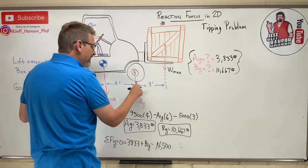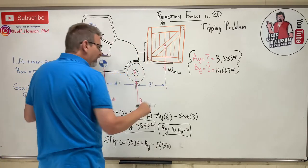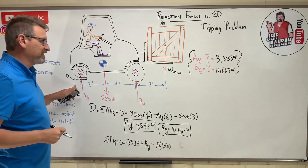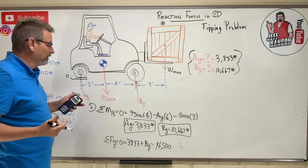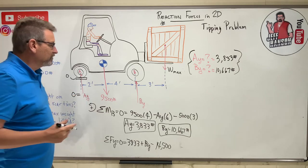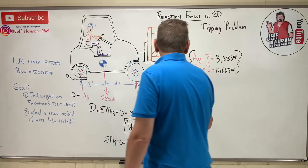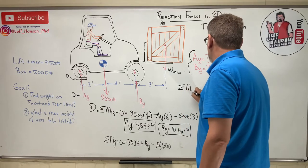You got to think about that. The problem won't tell you that Ay is zero, right? You've got to think about this thing is going to rotate about this point. It's going to tip over that way, so that guy's going to go to zero. That's why it's called a tipping problem. I like the tipping problems, right? Okay, so let's do this again. Let's take the sum of the moments about point B one more time.